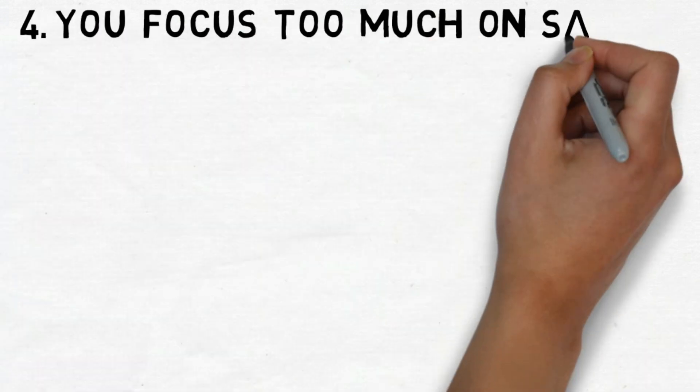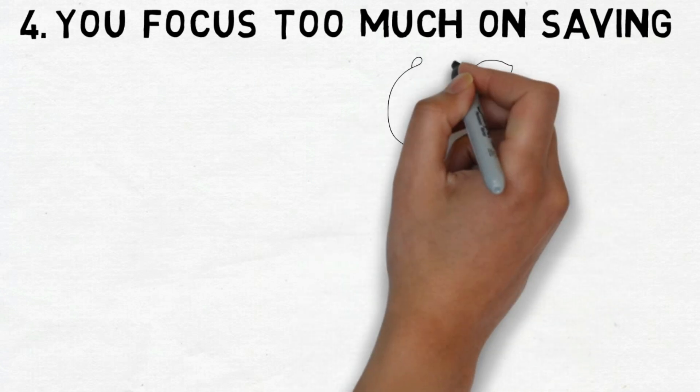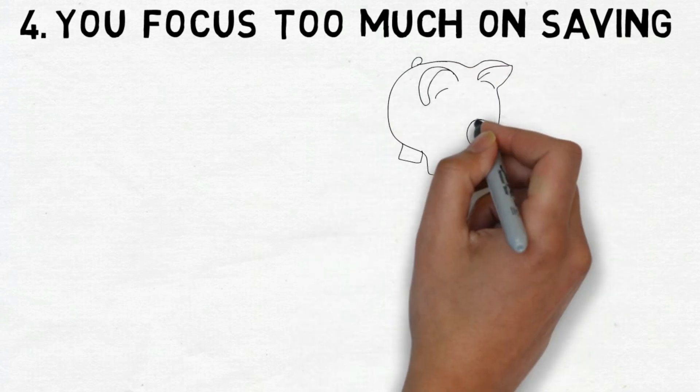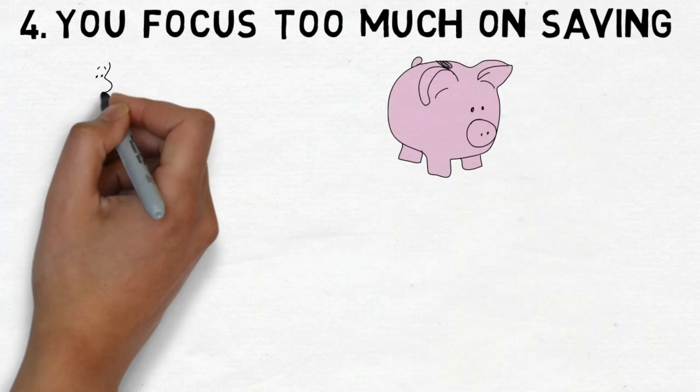Number 4. You Focus Too Much On Saving. Of course, it's really important to talk about how saving money is crucial, because without it, getting really rich becomes much harder. However, many poor people tend to focus too much on being very careful with what they spend.